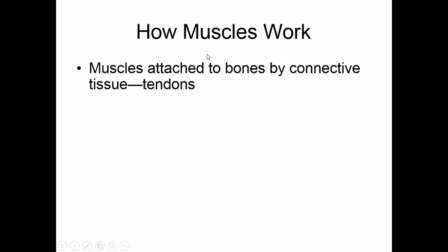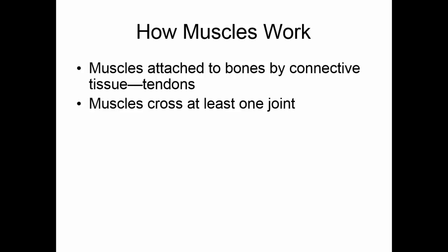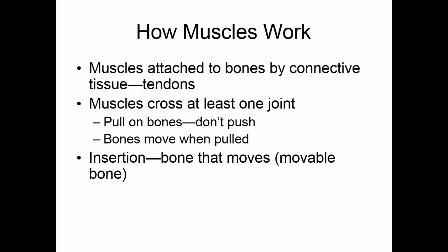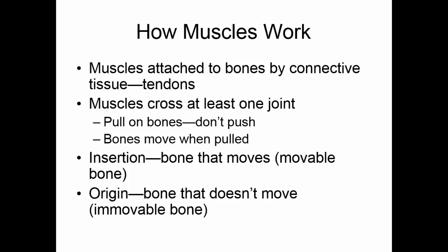Muscles are attached to bones by connective tissue, usually by tendons, and muscles cross at least one joint. When muscles contract, they pull on bones — muscles never push, they always pull. Because they cross a joint, whenever the muscles shorten, the bones move. One bone moves when the muscle contracts — this is called the insertion of the muscle, and this is the movable bone. The other bone remains stable; this is known as the origin of the muscle, and this is the immovable bone.